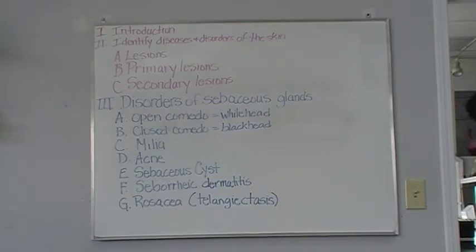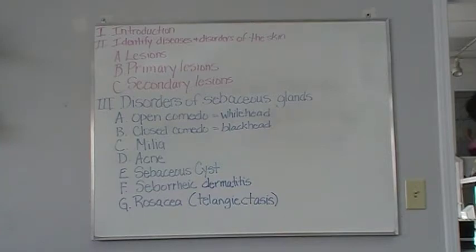Those are your secondary skin lesions: crust, excoriation, fissure, keloid, scale, scar or cicatrix, and ulcer. There are some excellent graphs in your book on this.